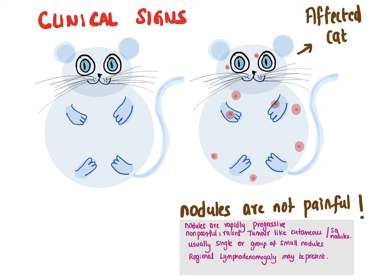The clinical signs are mostly that the owner will bring the cat with lots of nodules, and these nodules are rapidly progressive and they spread locally. These nodules are raised, fleshy, tumor-like cutaneous nodules. They are not generally painful, and the lesion ranges from a few millimeters to four centimeters in diameter. The lesion can occur anywhere in the body, but it usually begins as a single nodule or a group of nodules in the head or in the lips. Widespread cutaneous involvement tends to occur within two months, and regional lymphoid involvement can also be seen. Your important differential diagnosis should also include opportunistic mycobacteriosis and other cutaneous nodular lesions and tumors.